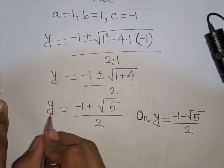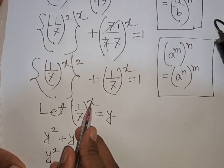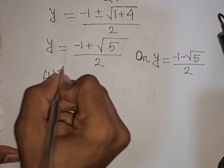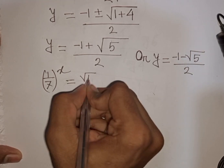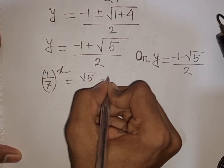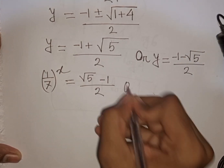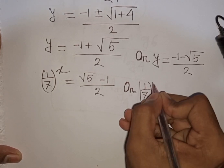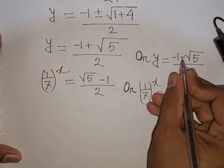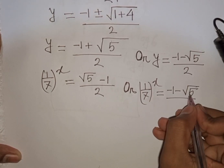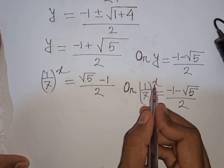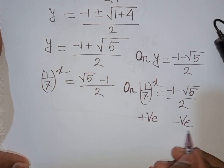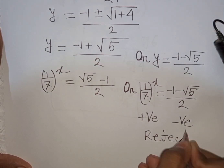Recall that y = (1/7)^x. Since (1/7)^x is always positive, it cannot equal a negative value. The second case y = (−1 − √5)/2 is negative, so this is rejected. We keep only y = (−1 + √5)/2, which is positive.